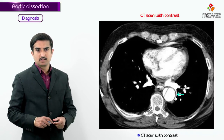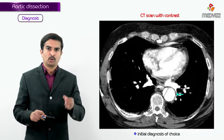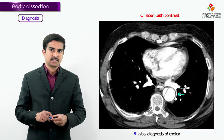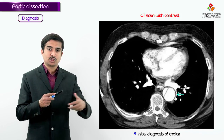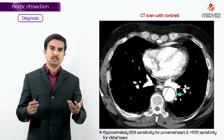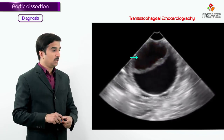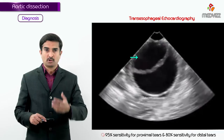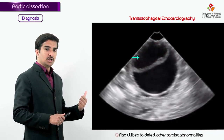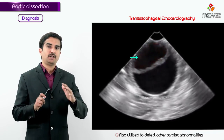CT with contrast is the quick, non-invasive initial diagnostic modality of choice for aortic dissection. CT has approximately 80 percent sensitivity for proximal tears and greater than 90 percent for distal tears. Transesophageal echocardiography (TEE) has greater than 95 percent sensitivity for proximal tears and 80 percent for distal tears — exactly opposite to CT — and can also detect other cardiac abnormalities like pericardial disease.